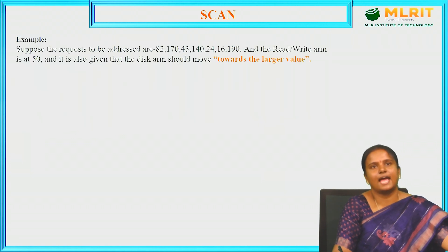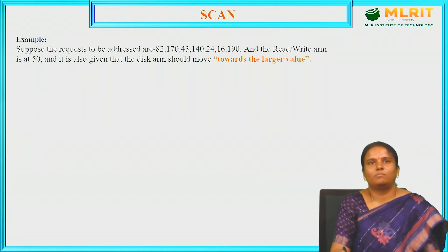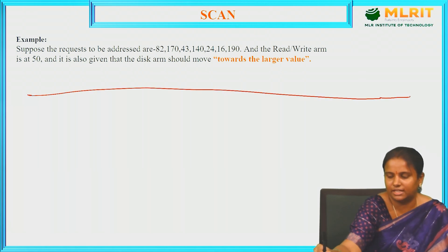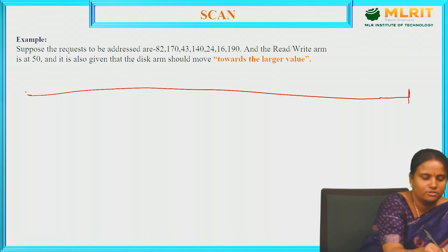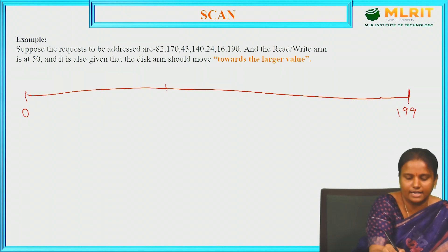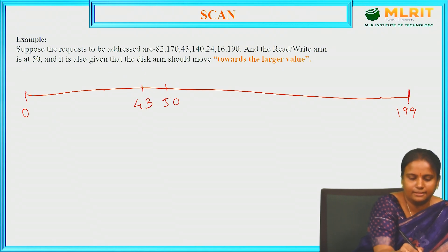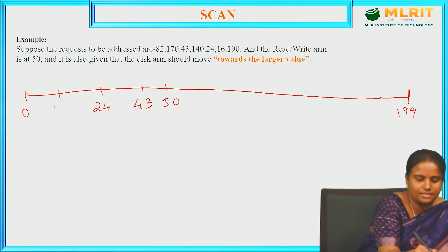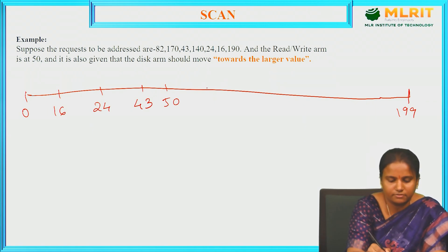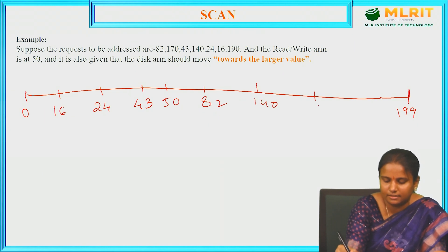Let us see the SCAN algorithm with an example problem. The disk arm range is 0 to 199. Head starts at 50. The request queue is: 43, 24, 16, 60, 82, 140, 170, and 190.